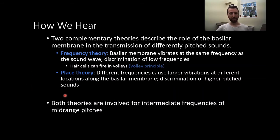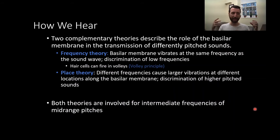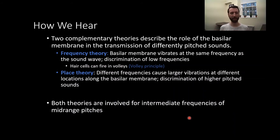There's also the place theory: different frequencies cause larger vibrations at different locations along the basilar membrane, allowing discrimination of higher pitches. The membrane is organized so that stimulation of different portions along its length is coded as different frequencies. Stimulation at one end produces perception of a low sound and at the other end a high sound. This works well for higher frequency sounds that cannot be coded even with volleying. Both theories, however, are involved in coding intermediate frequencies for mid-range pitches.